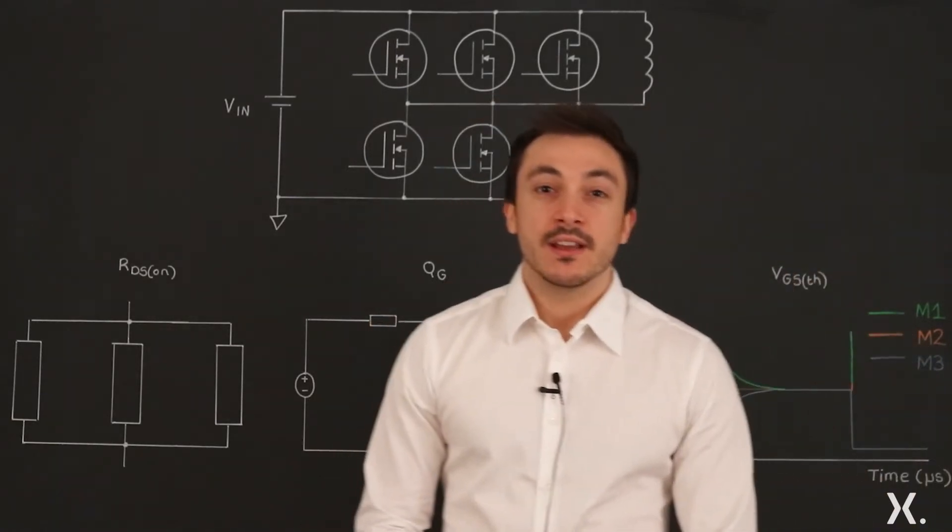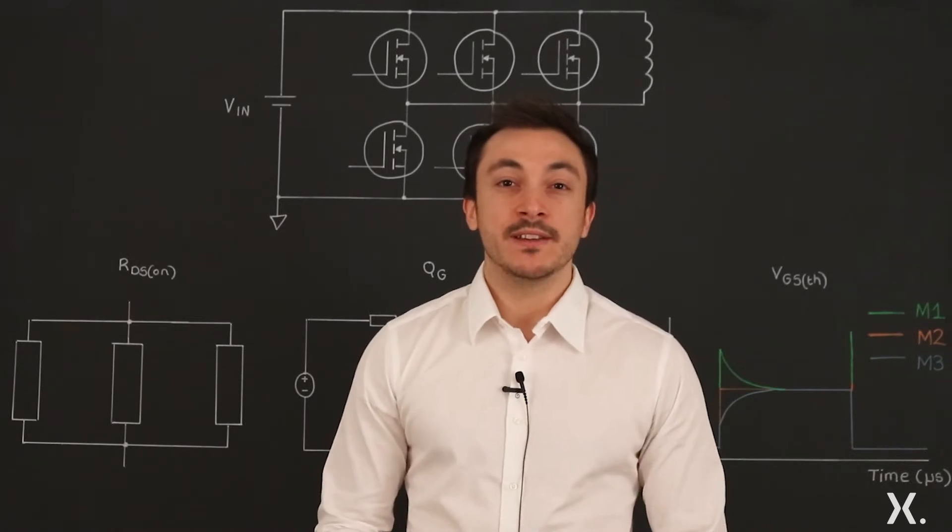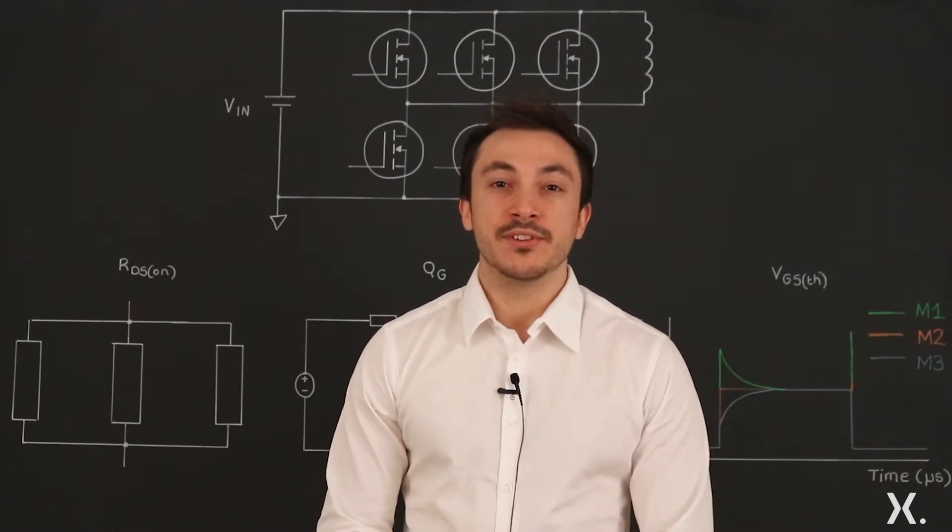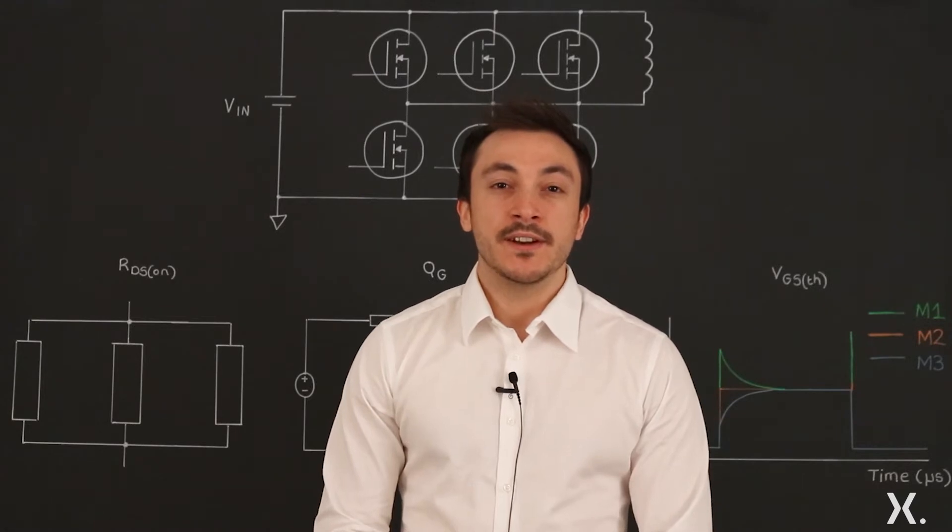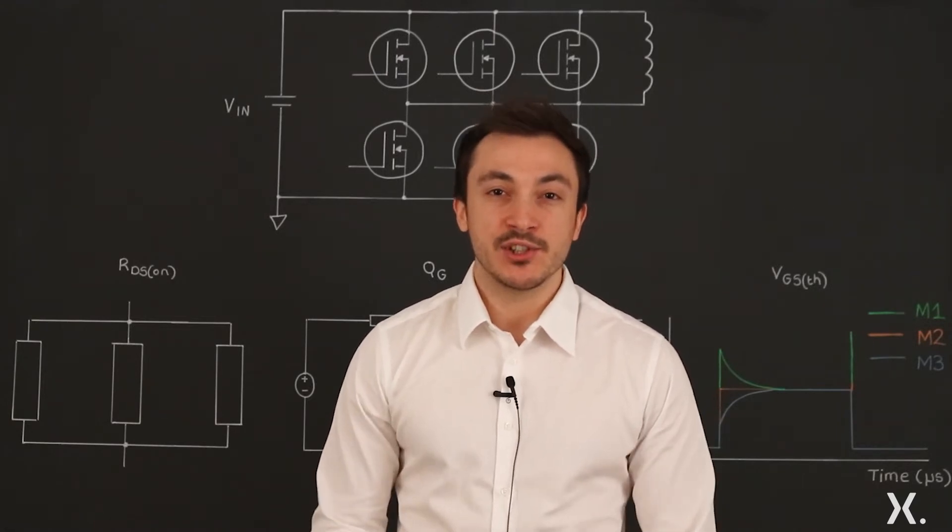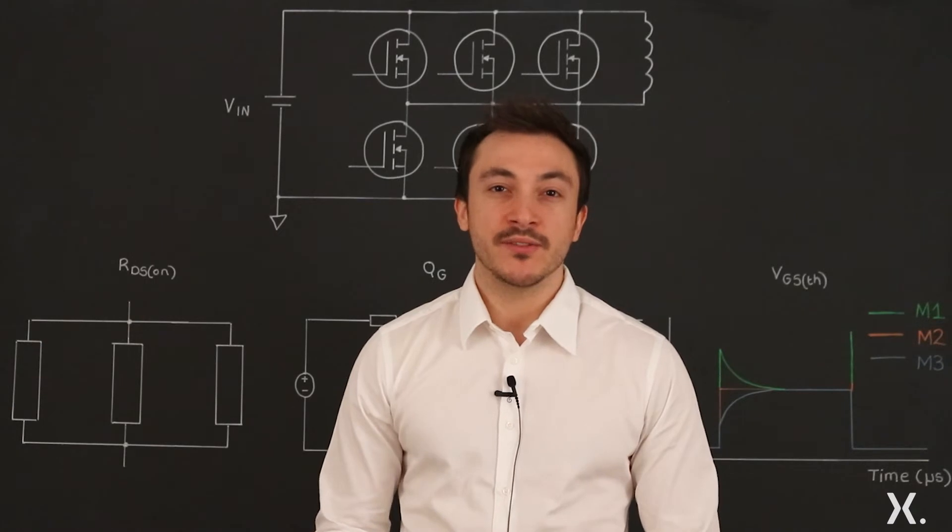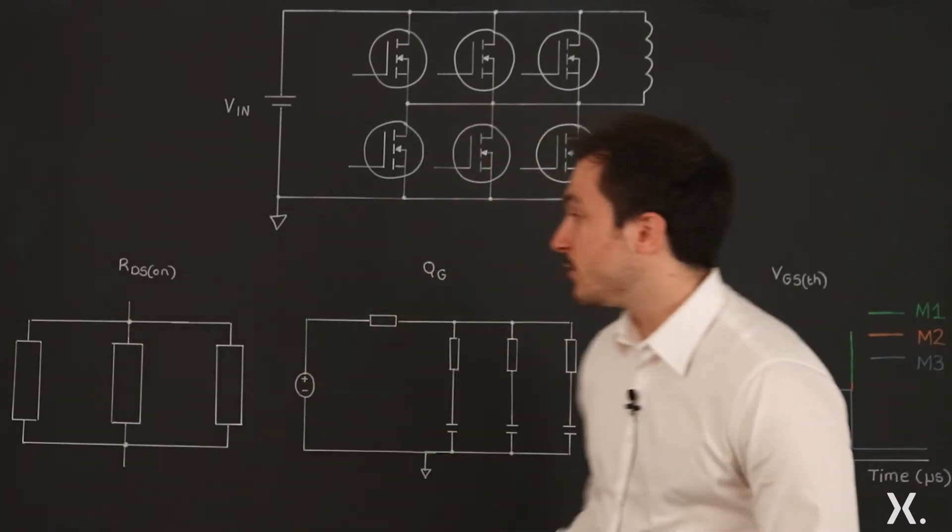Current sharing can be influenced by both internal and external parameters of the MOSFET. Internal parameters are related to certain datasheet specifications and their part-to-part variation, also known as spread. We identified three parameters: